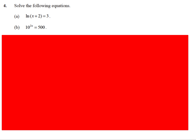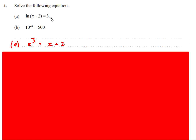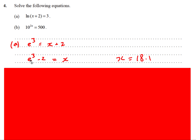Next: solve equations involving ln. Remember ln is just log base e, so ln(x+2) = 3 means e³ = x + 2. Rearranging: x = e³ − 2. If non-calculator, leave it as e³ − 2; using a calculator to three significant figures gives x ≈ 18.1.